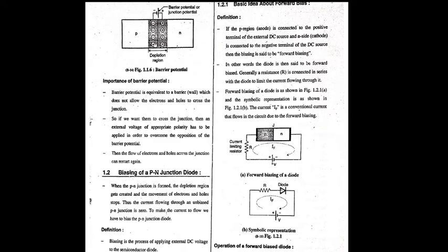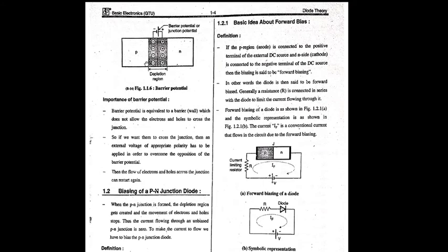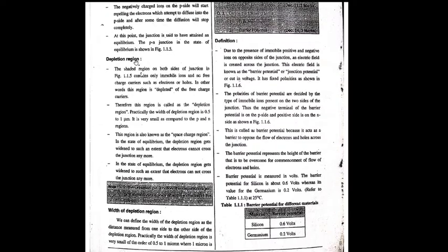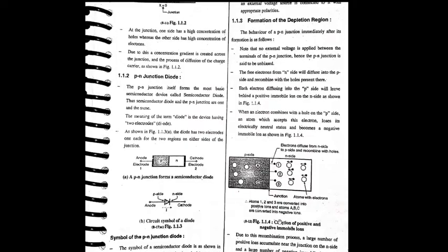If we have to use this potential, the potential must be more than this and it should be connected in the correct direction. That is the importance of the barrier potential. Silicon barrier potential is 0.6V, Germanium is 0.2V.